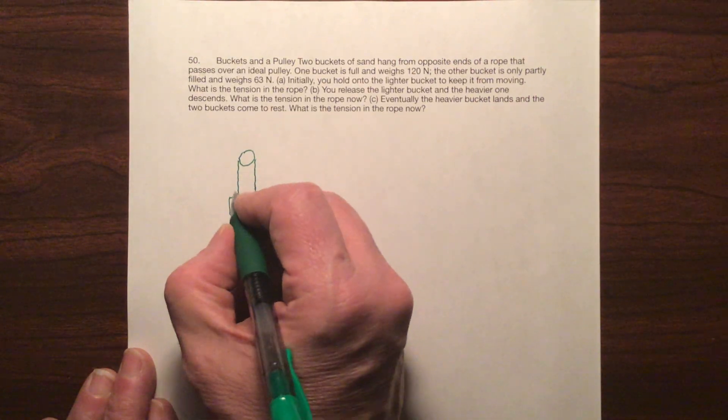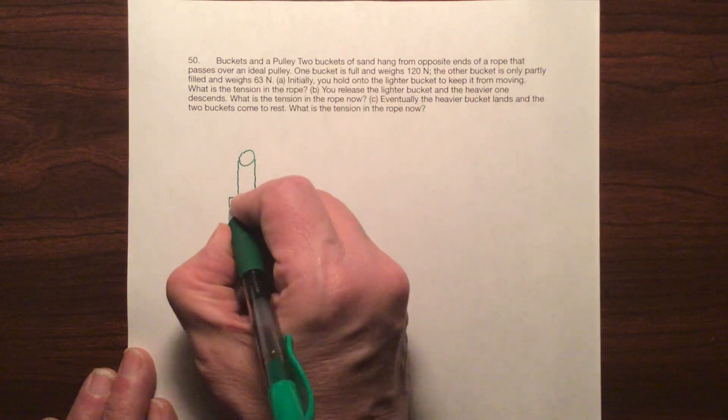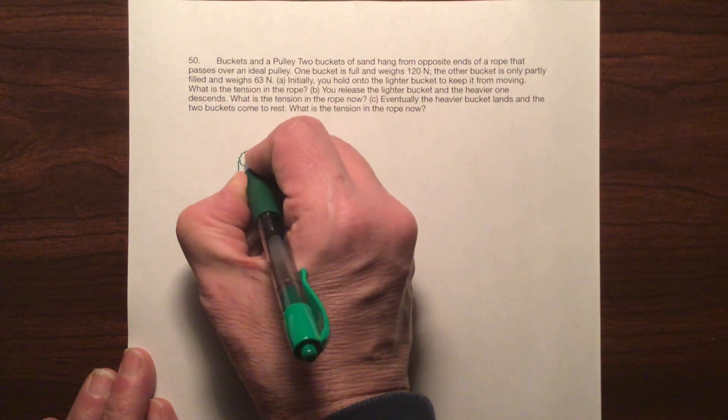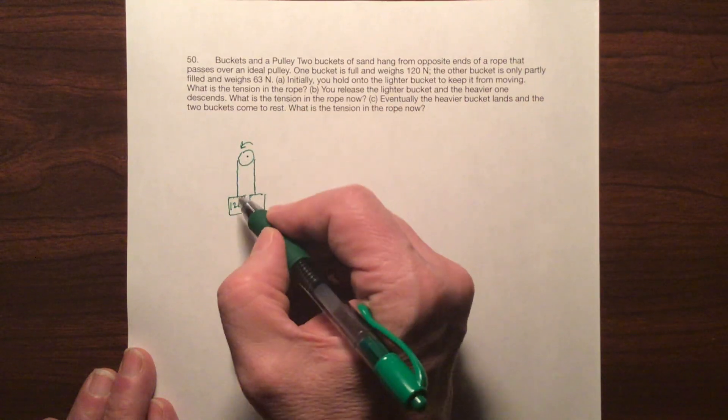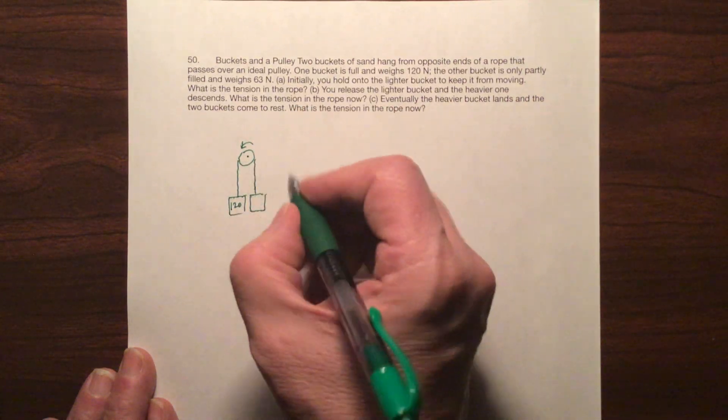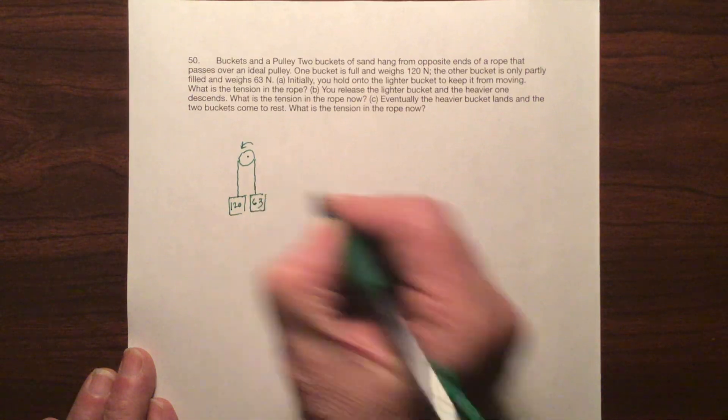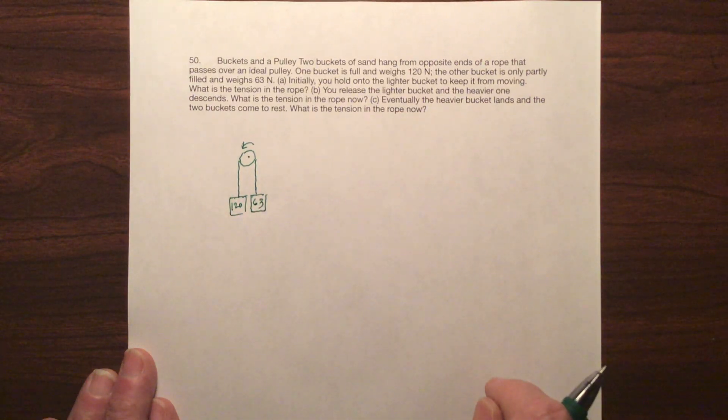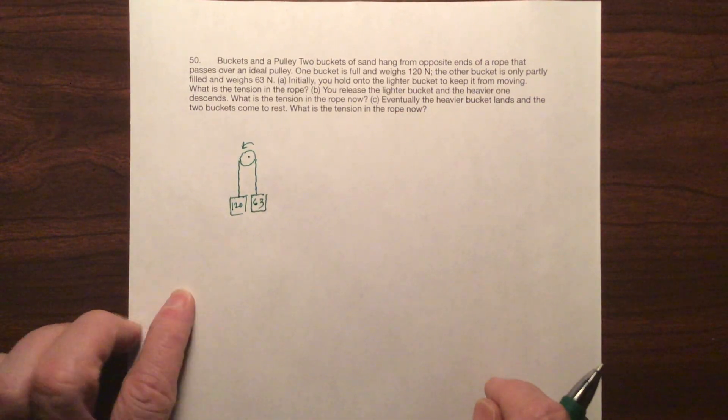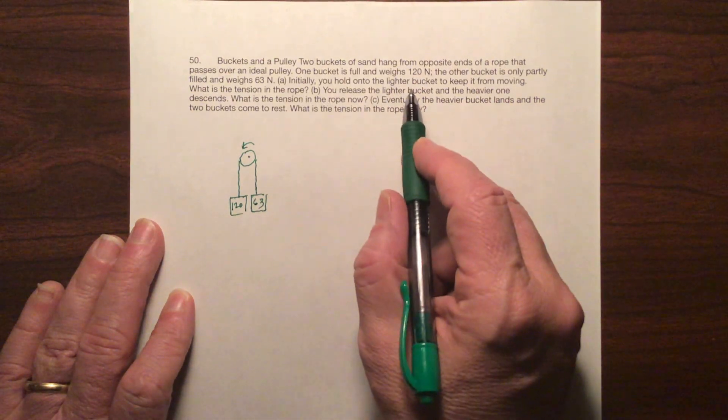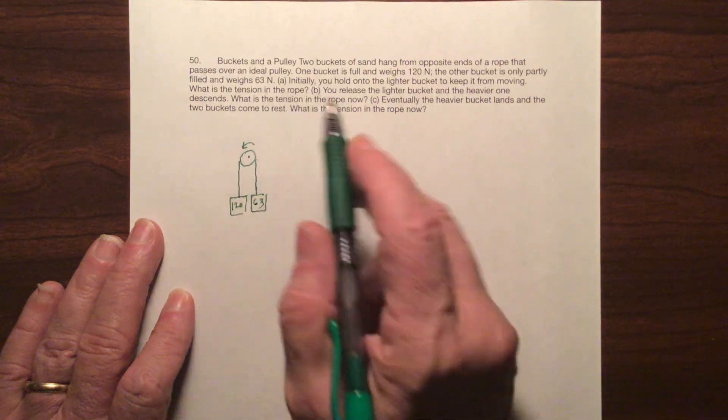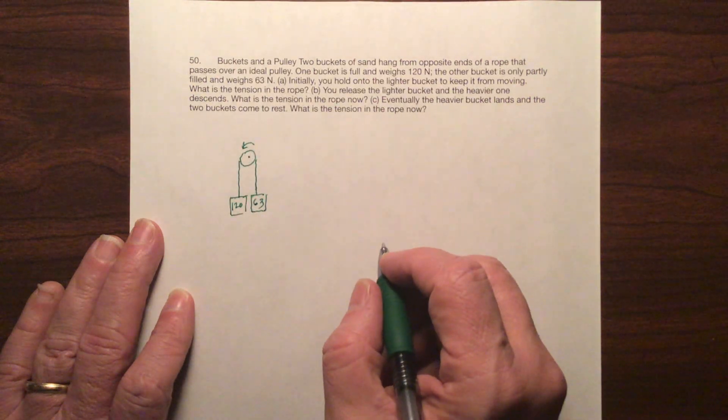So they're giving this to you in Newtons already, so this is 120 Newtons and you're gonna get a turn in this direction because it's heavier. This is 63 Newtons. Alright, so what do we have? First question says, initially you hold on the lighter bucket to keep it from moving. What's the tension in the rope?